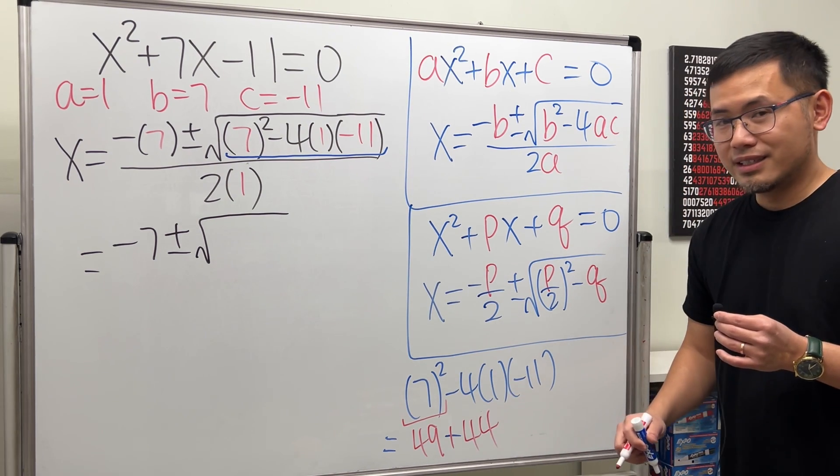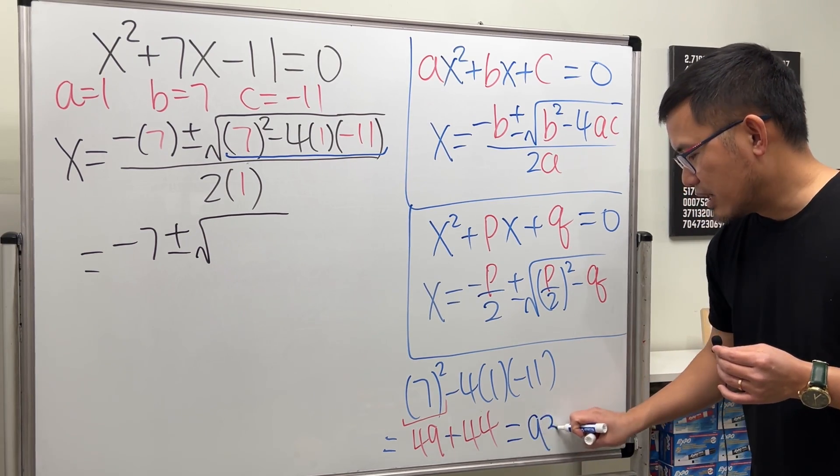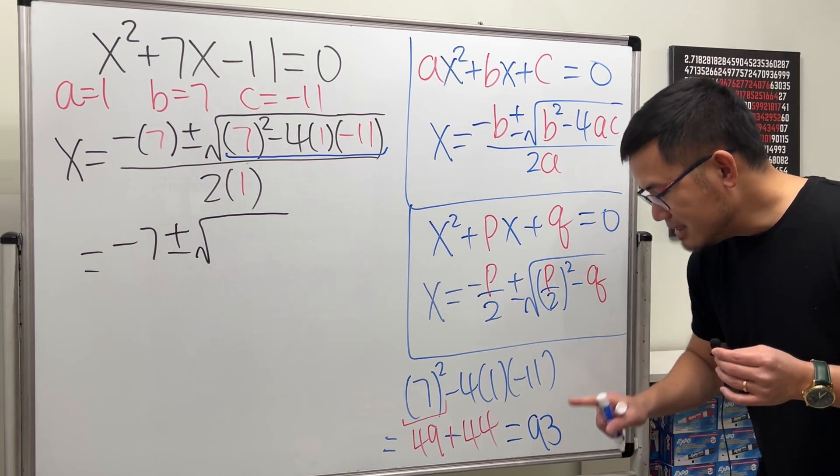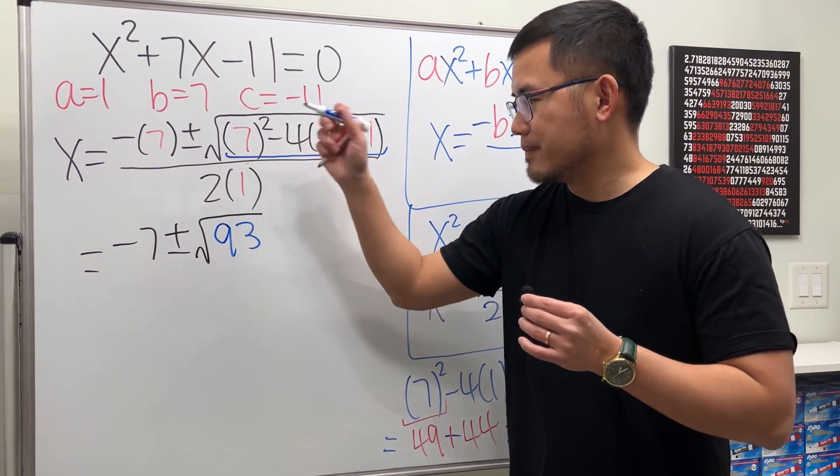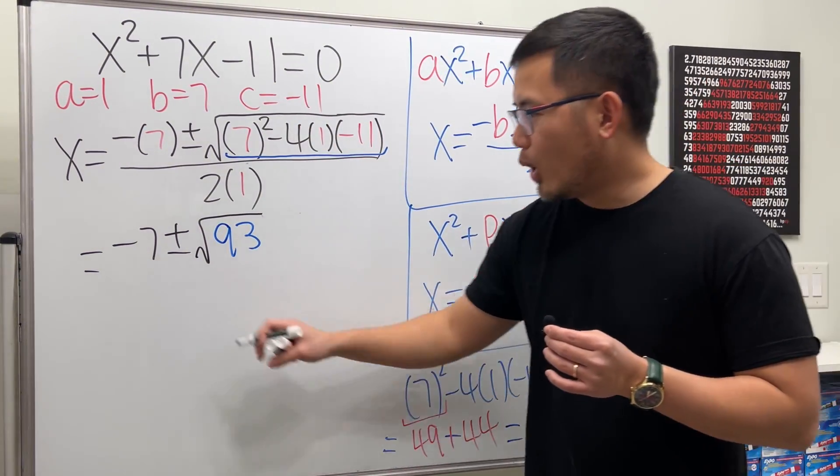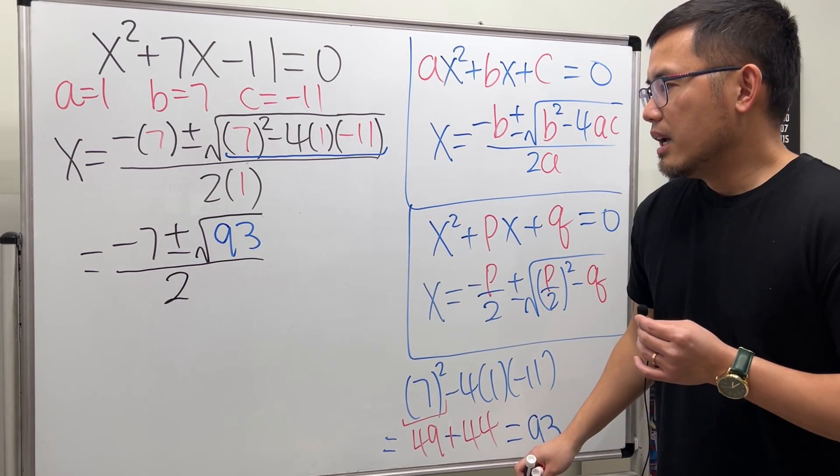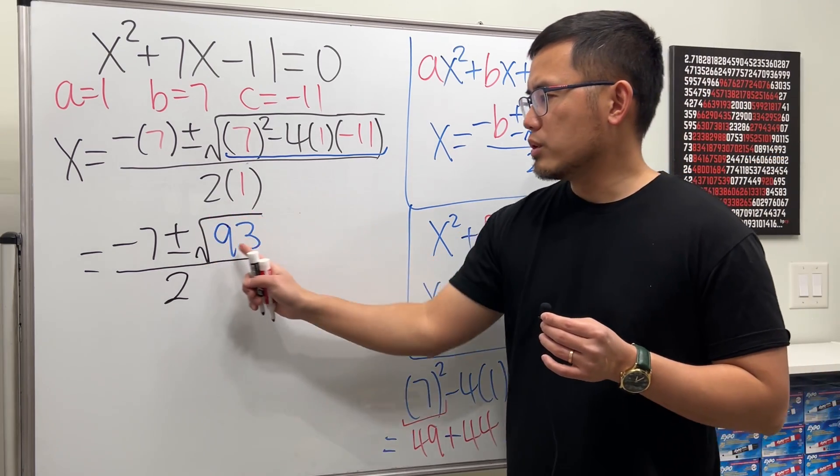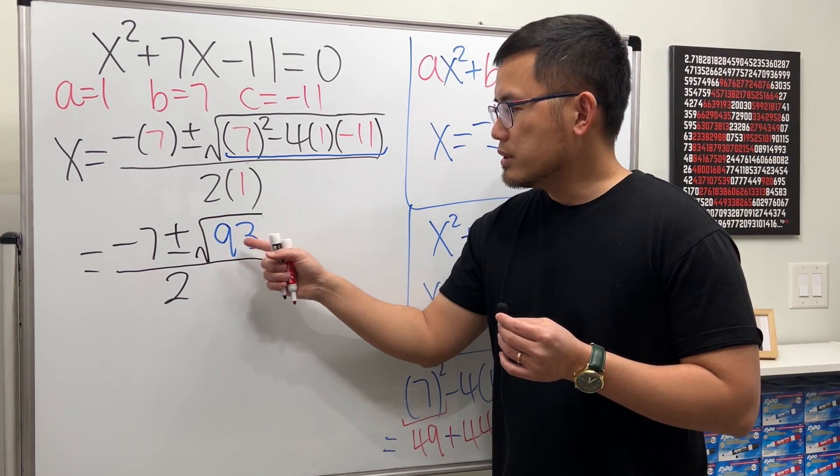Just like that. And now you can just add 49 + 44, which will give us 93, and this is the number that goes inside of the square root: 93. And then all divided by 2 times 1, which is 2.